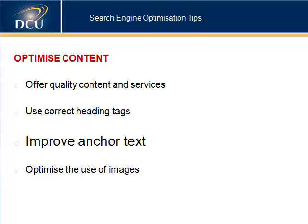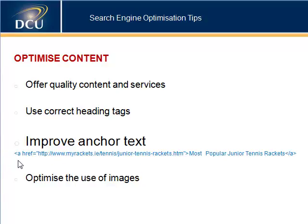Improving the anchor text is another way to optimise content. Anchor text is the clickable text that appears on links, placed between anchor tags — the a href equals tag. This anchor text accurately describes the content on the linked page. It informs the user and search engines what the linked page contains; the text itself should be short, concise and descriptive.